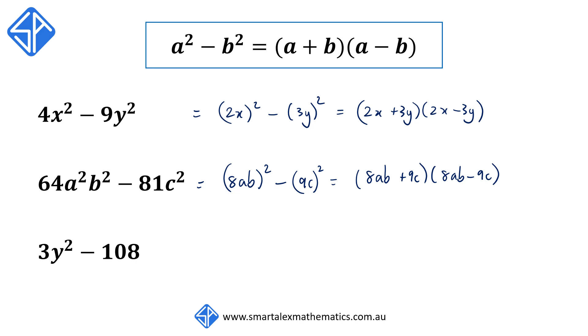Our next example, 3y² - 108. Now we may recognize that 3 and 108 aren't perfect squares, but what we can do is factorize out the 3 first, so that we get 3(y² - 36).